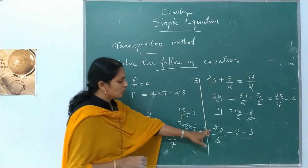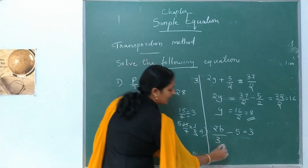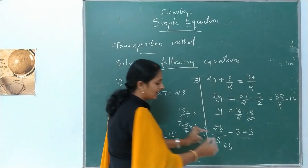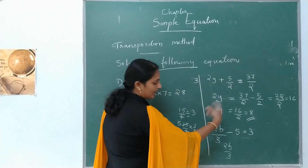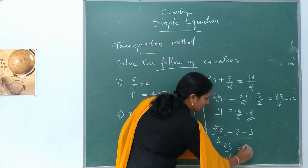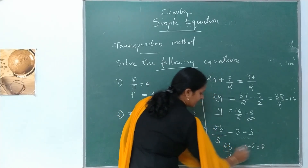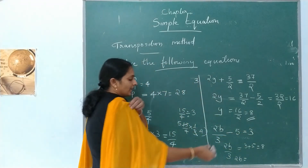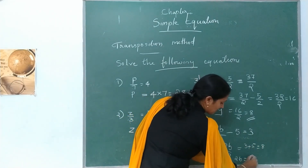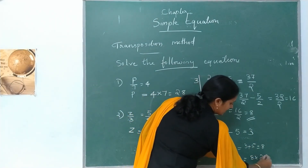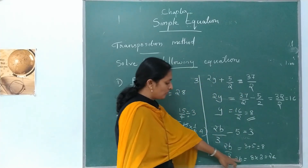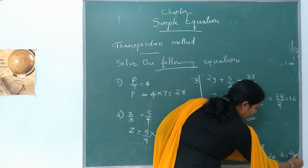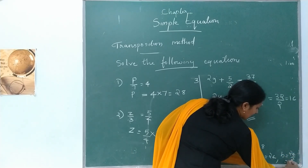Next one: 2b by 3 minus 5 is equal to 3. First, transpose negative 5 to the RHS — it becomes positive. So 2b by 3 equals 3 plus 5, that is equal to 8. Now transpose 3 — division becomes multiplication. So 2b equals 8 into 3, that is 24. Then b equals 24 divided by 2, that is equal to 12.